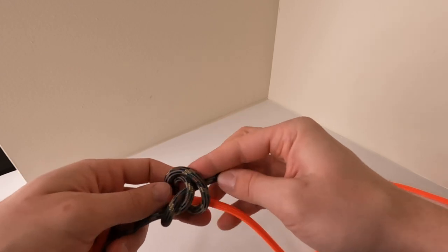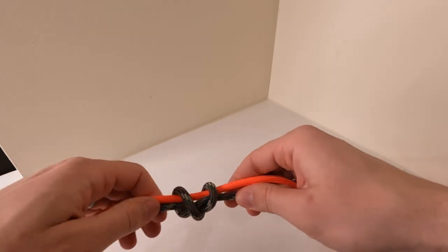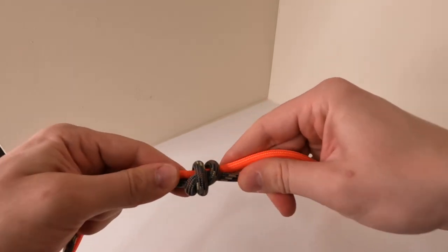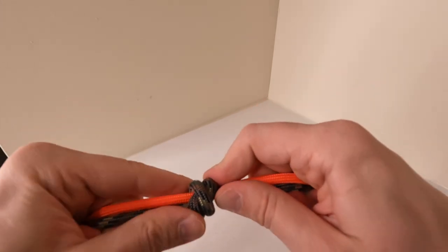The working end of this rope being pulled the opposite way of what I did with the other knot. Dress the knot by pulling it tight.